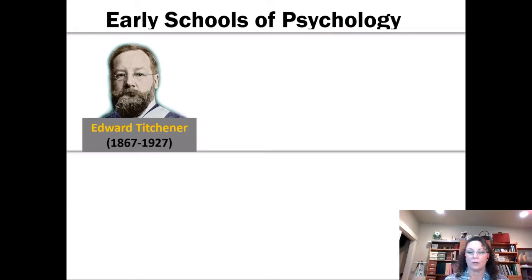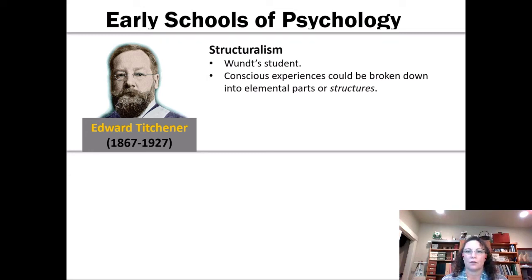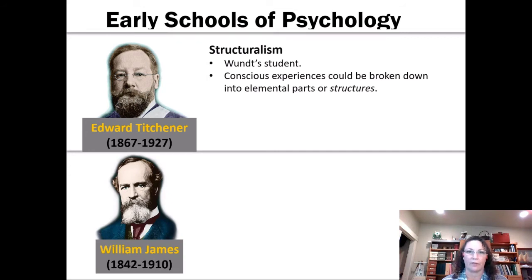Edward Titchener was one of Wundt's students, and he actually gave a name to what Wundt had been studying—he called it structuralism. What Wundt was really interested in was trying to figure out what makes up your conscious experiences, the things that you're aware of, what factors go into that awareness. He was trying to figure out the structures that support your conscious awareness, and so Titchener is credited with coming up with the name for that.